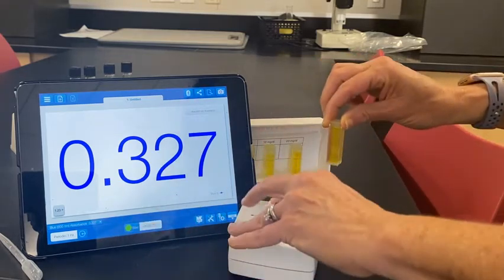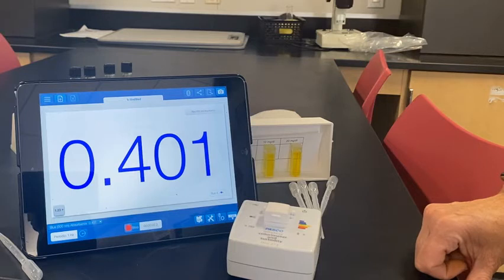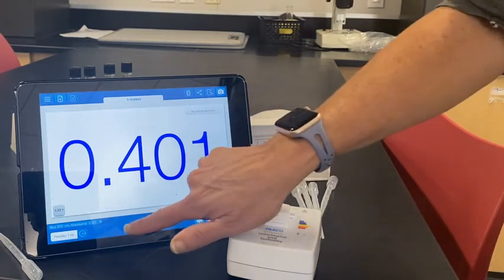You can stop in between readings if you'd like. Be sure to record the percent absorbance for each known sample, and make sure everything aligns correctly with no cross-contamination. Once you've collected all the data and the table is complete, you will then make your standard curve and use it for your patient.